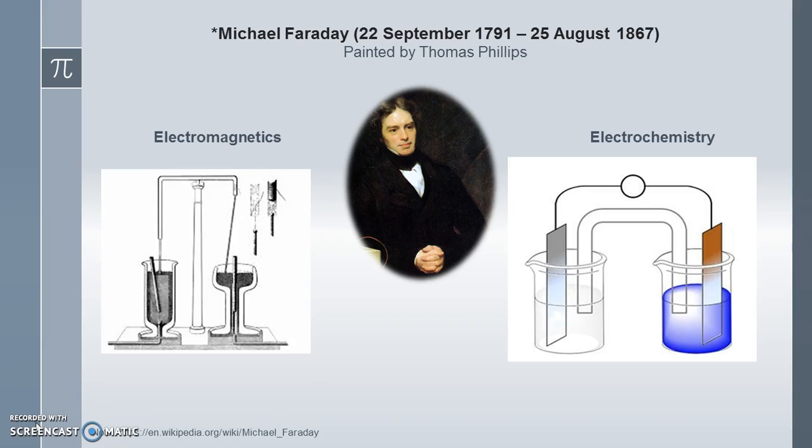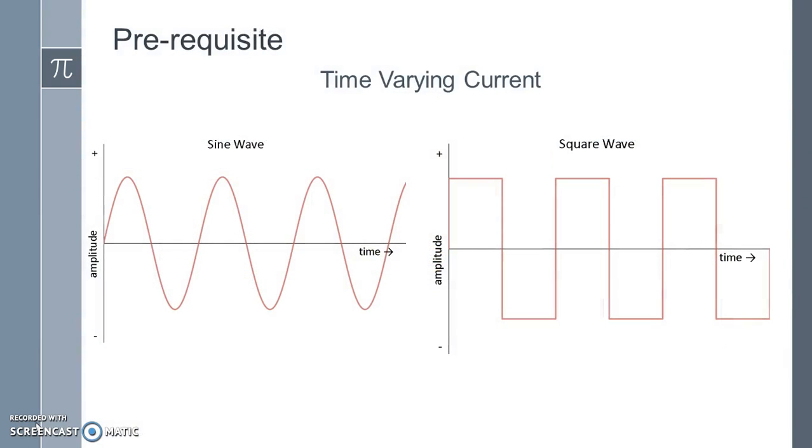Before understanding what is Faraday's law, let us first understand what is time-varying currents. Time-varying currents are those which vary with time. For example, sinusoidal currents, square wave currents, triangular wave currents and many more.